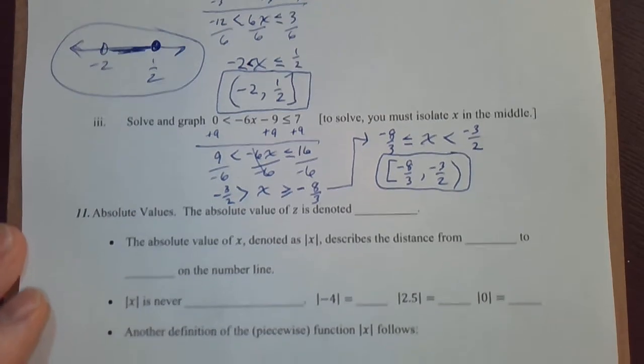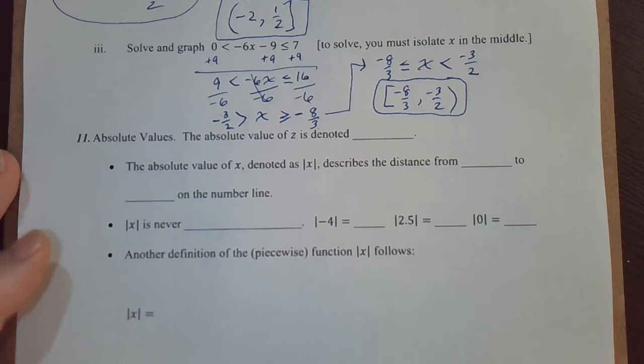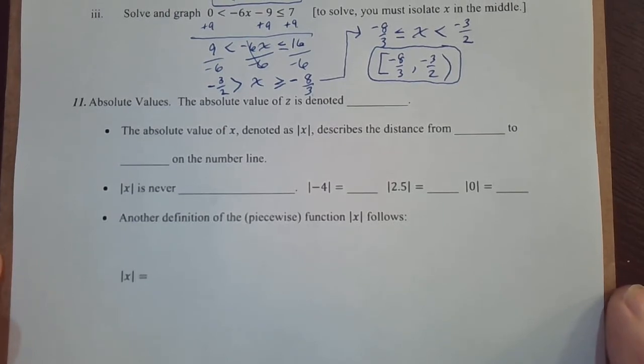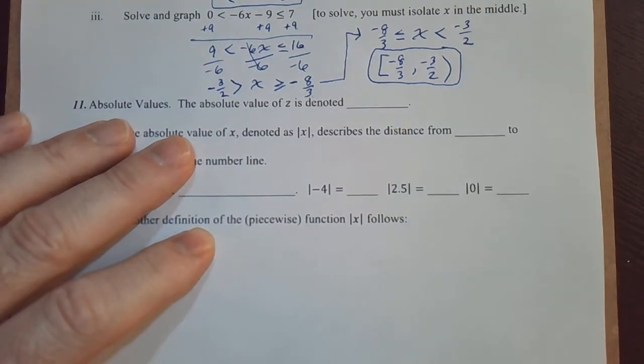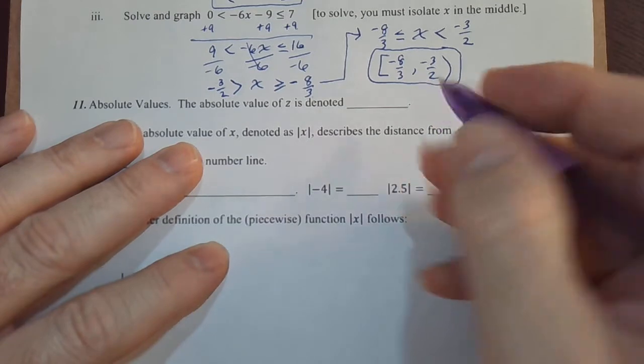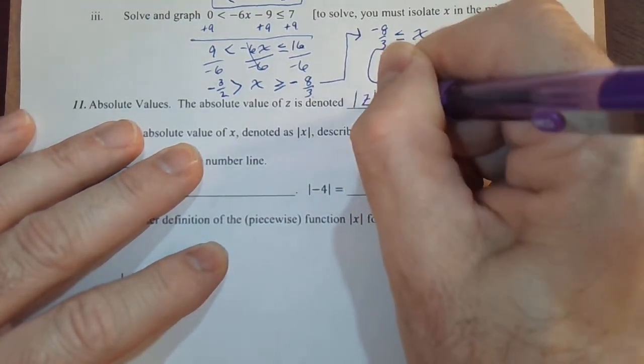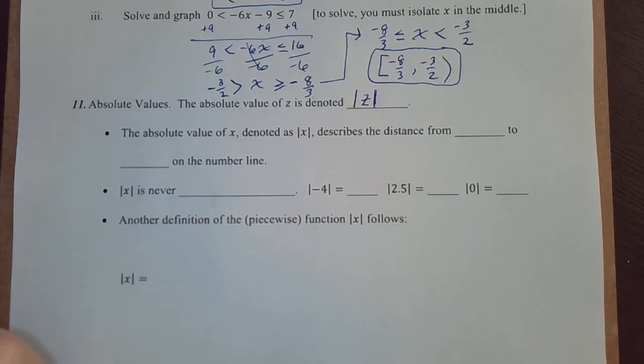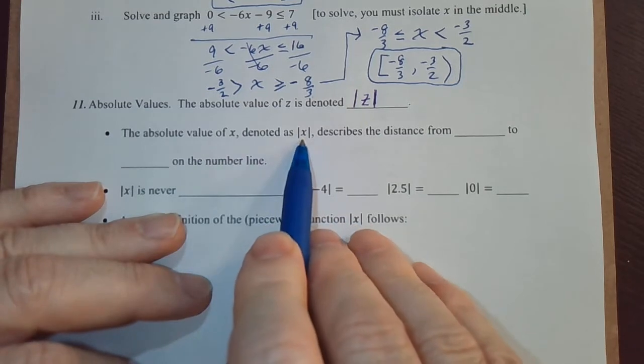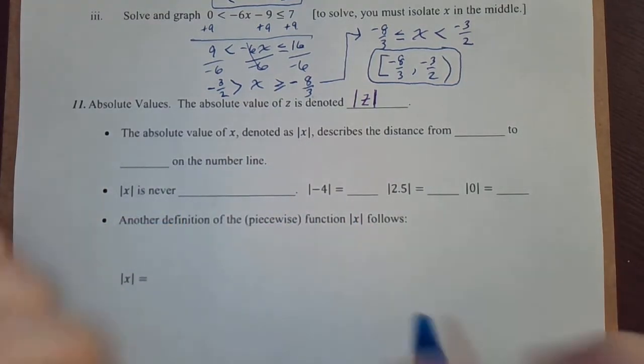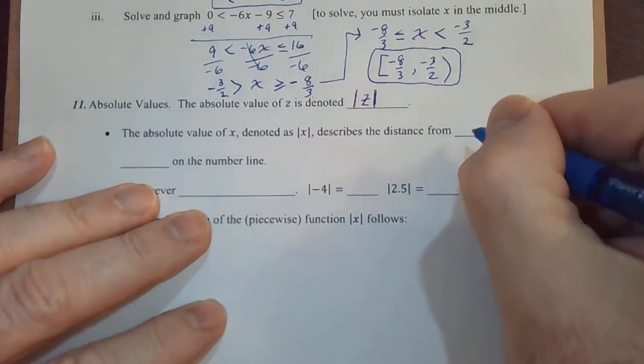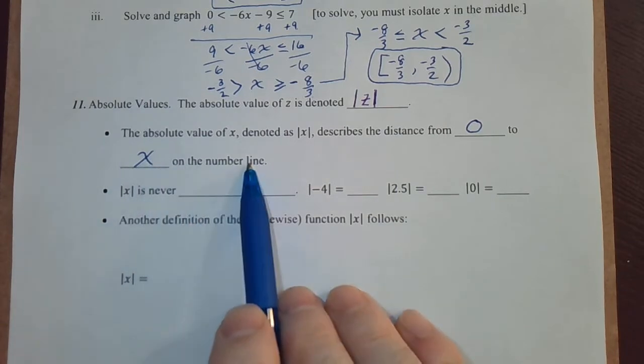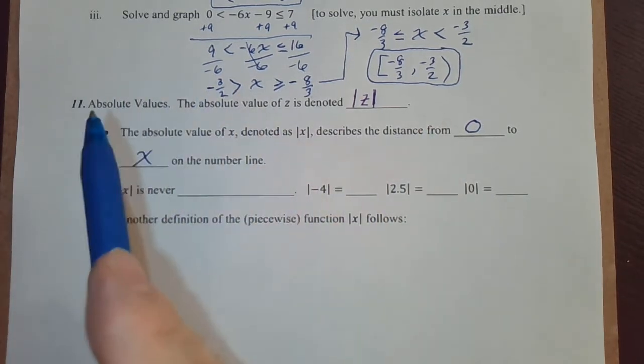Now we've got to dive into absolute value inequalities. This can be a little bit confusing, but if there's just a couple of things you'll memorize, you'll have no problems with this. Absolute values. The absolute value of z is denoted, the symbol we use is z with vertical bars around it. That's the absolute value of v. Now let's define it. The absolute value of x, denoted like this, describes the distance from 0 to x on the number line, or the distance from x to 0 on the number line. Distance, we always think of positive.